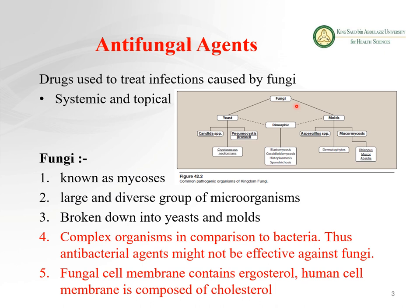The cell wall of fungi is composed largely of chitin, which is a very thick and rigid structure compared to peptidoglycan. Another difference from human cells is that the cell membrane of fungi is composed of ergosterol, while human cell membranes are composed of cholesterol. That is the main difference between human and fungal cells. The area we will target for these fungal cells is the ergosterol component of the fungal cell membrane, so the drug will be less effective on human cells.